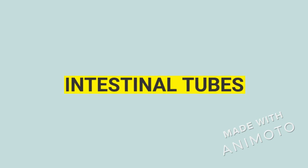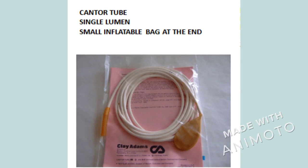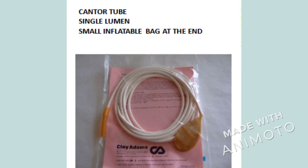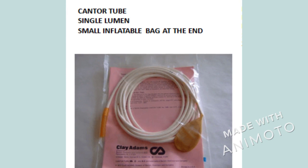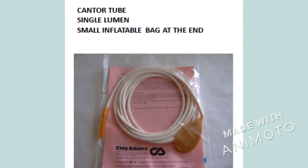The second type of tubes are the intestinal tubes. Intestinal tubes are also divided into two types. First is the single lumen tube, that is the Cantor tube. The Cantor tube is a simple single lumen tube which has an inflatable balloon at the end, filled with a heavy metal substance like tungsten, so that it can reach the intestine.